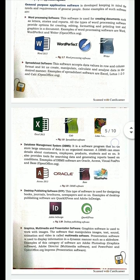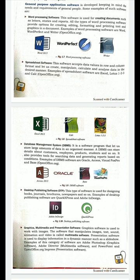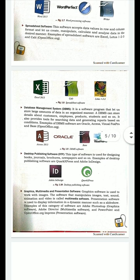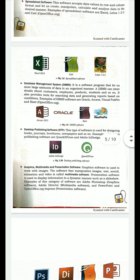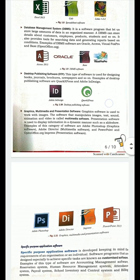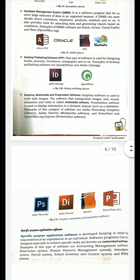Spreadsheet software is also a general purpose software designed to create worksheets on the computer and to perform mathematical calculations — for example, Microsoft Excel. DBMS (Database Management System) is a type of general purpose software designed to create and manage a database. Desktop publishing software (DTP) is also a type of general purpose application software designed for designing books, brochures, newspapers, and so on.